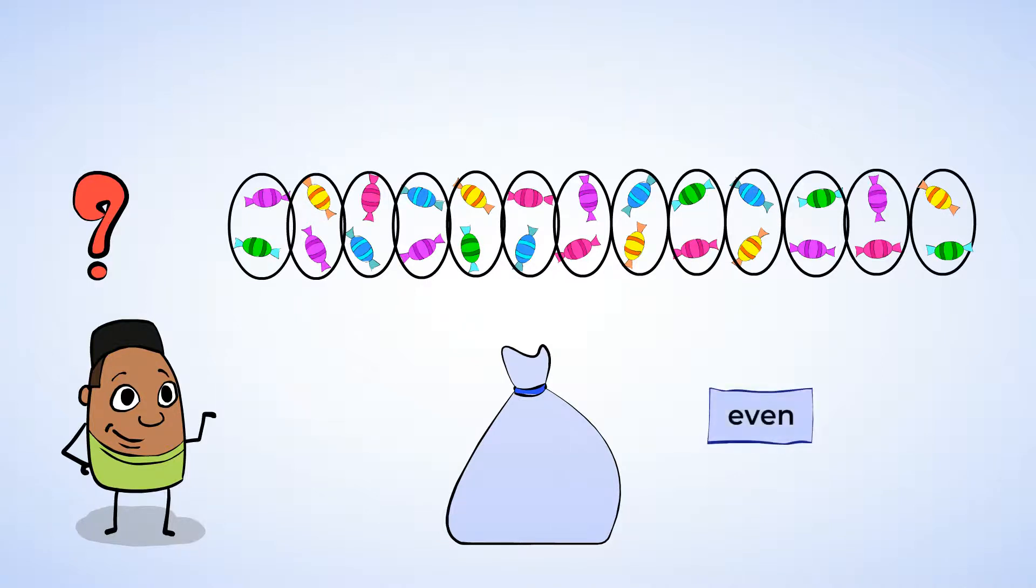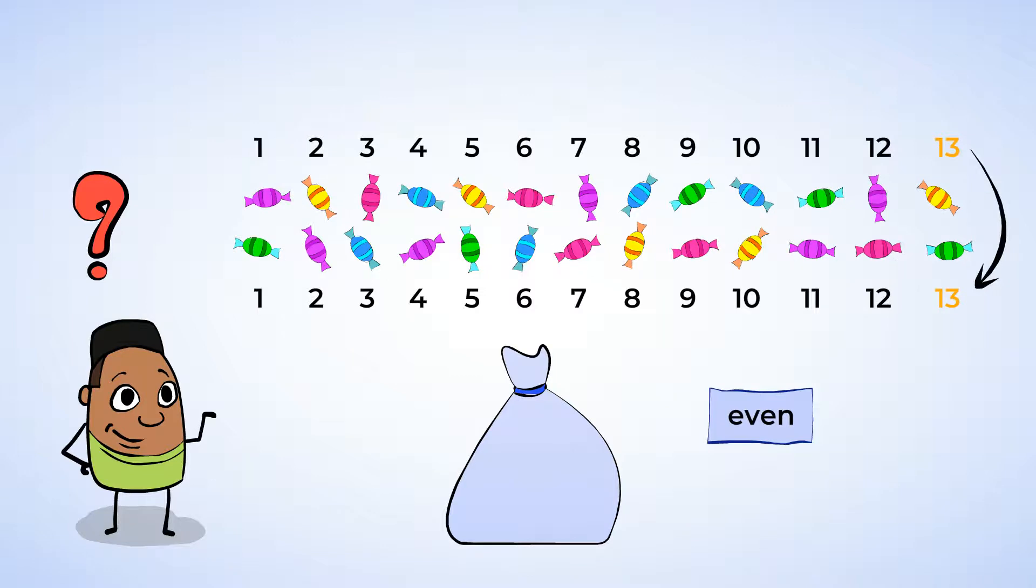So, there are an even number of candies. But, let's count them just to double check. We were right! There are 13 candies in each group. So, the number in each group is the same. And that means we have an even number of candies. That makes 26 an even number.